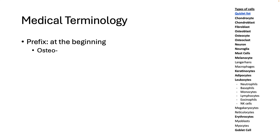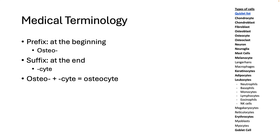A suffix is something at the end of a word. You might see the suffix '-cyte' quite a bit. 'Cyte' at the end of a word means a mature cell. So if you put these two — prefix and suffix — together, you get osteocyte. An osteocyte is a mature bone cell.